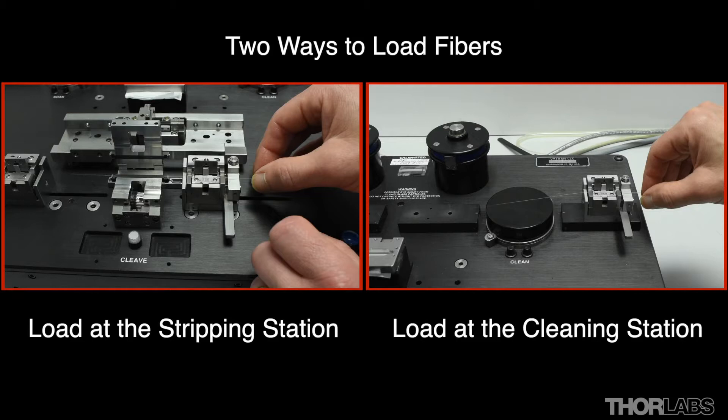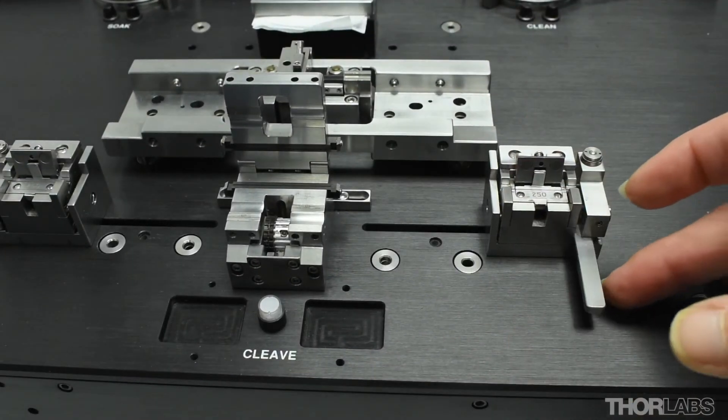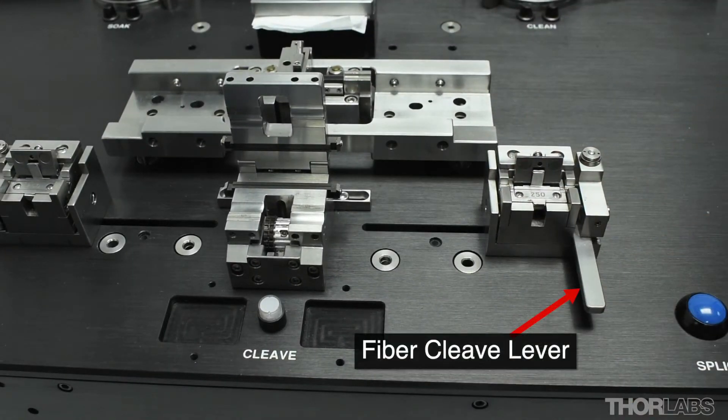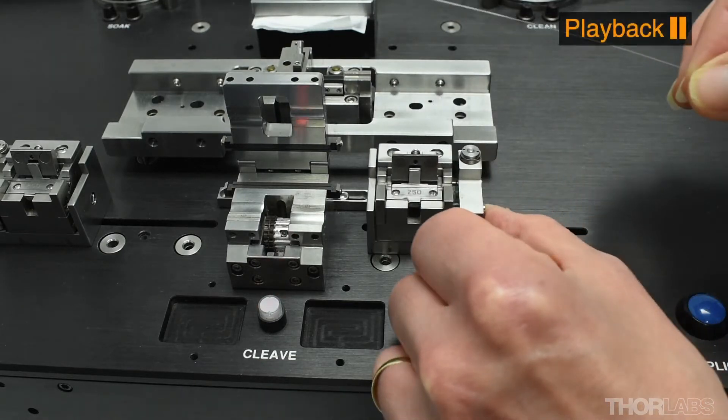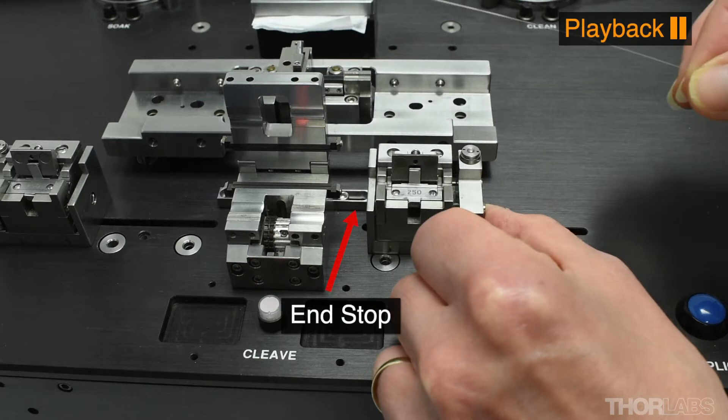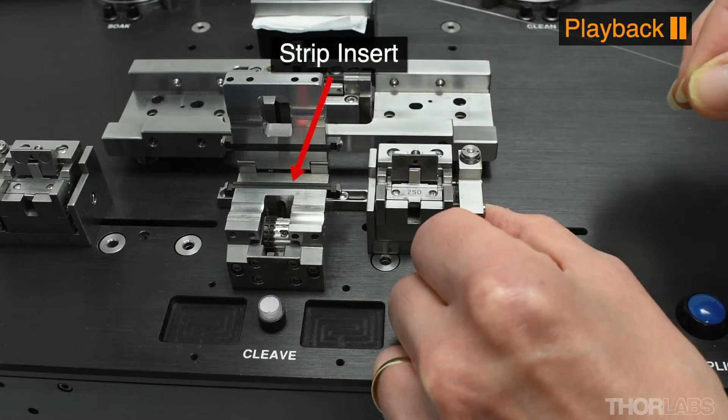There are two ways that fibres can be loaded into the fibre holding blocks. The first is at the stripping station. Make sure that the fibre cleave lever is facing forwards. Then move the fibre holding block fully along the stripping slot so that it is touching the end stop. This will activate the vacuum at both the fibre holding block v-groove and the stripping inserts.